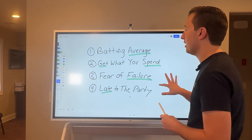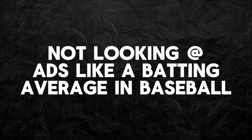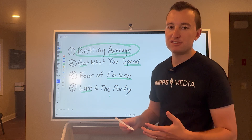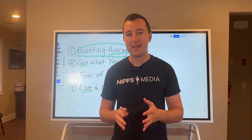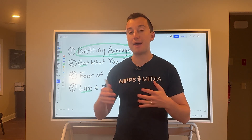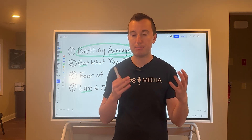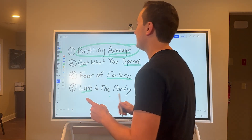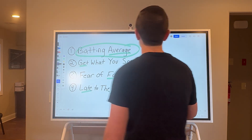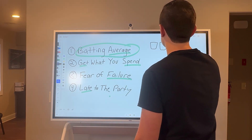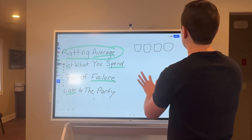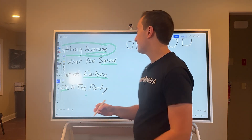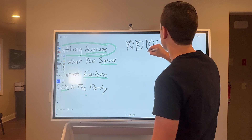Advertising mistake number one is not looking at Meta ads or Google ads like it's a batting average. When you're in baseball, if you're a great hitter and you're hitting three out of ten at bats that year, you have a 0.300 — in baseball terms, that's considered having a fabulous year. And Meta ads is very similar. You're going to create lots of different pieces of creative, some of which you'll love, some of which you'll just run to test, and most of them are going to fail.